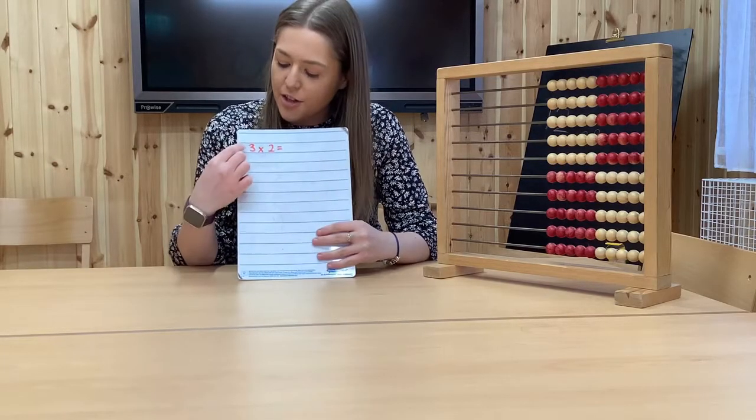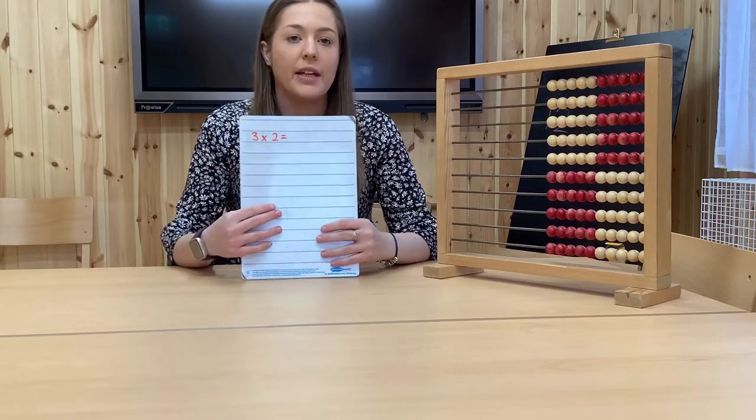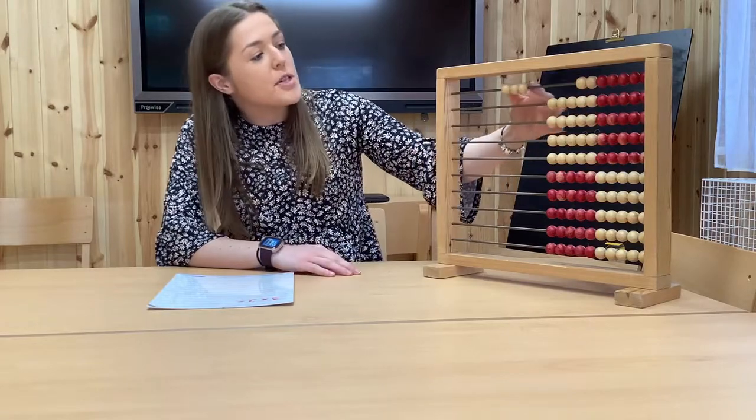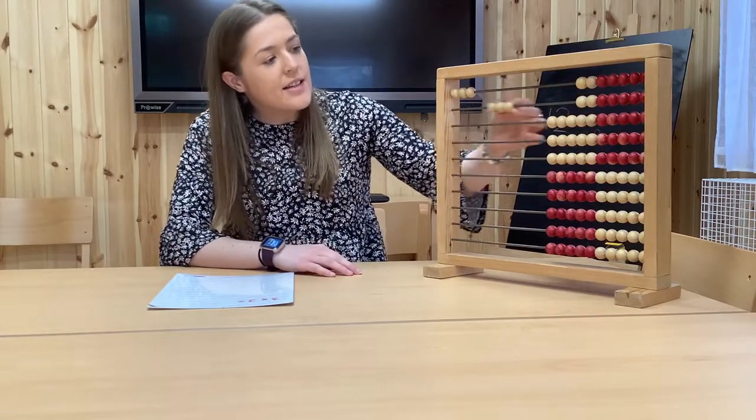First, we're going to have a look at the calculation 3 multiplied by 2 equals, and we need to find the product. We're going to use the abacus for this and we're going to make our array. 3 multiplied by 2 means that we have 3 two times. So I've got 3, 6.